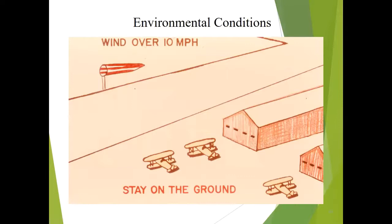Looking at environmental conditions: if it's over 10 miles per hour wind, just stay on the ground — don't make applications. Wind can change throughout the day, and over 10 mph can make a significant impact on how your product lays on the ground. Temperature changes also matter. A temperature change could lead to an inversion layer, and then the pesticide is just sitting in the air and could move up to miles away — that's definitely not intended.